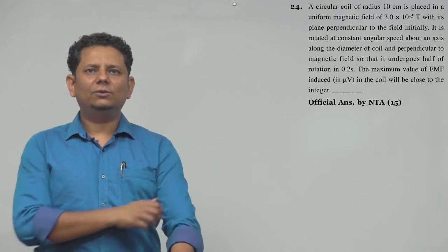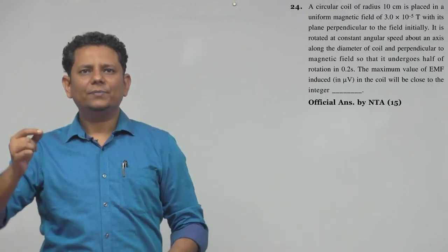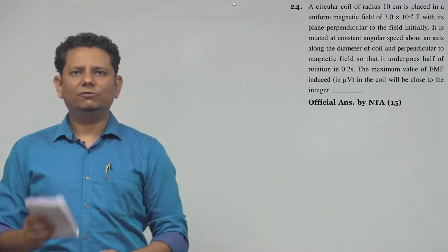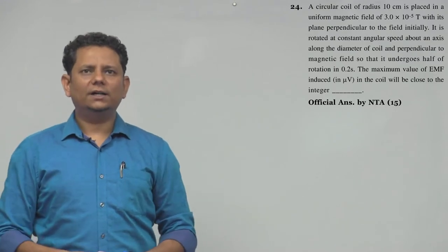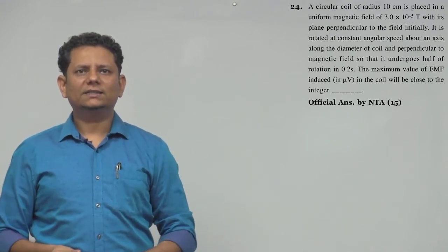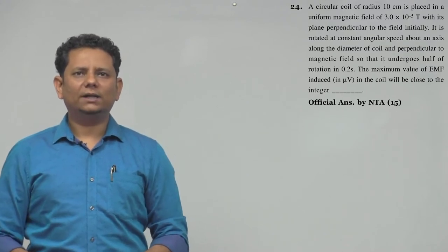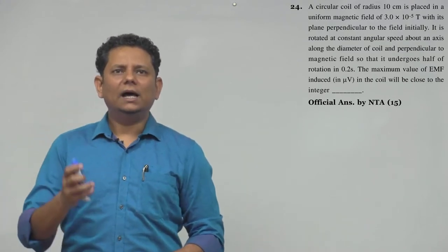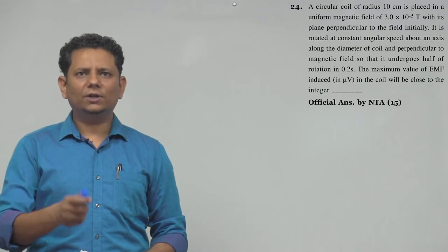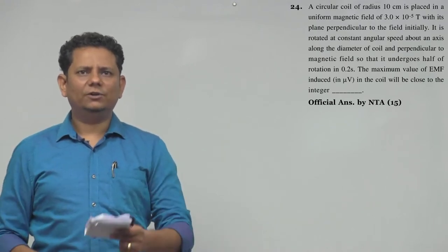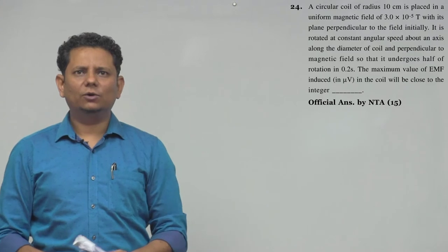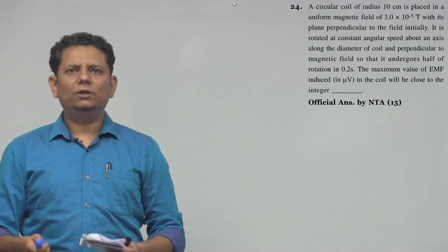Our next question says: A circular coil of radius 10 centimeters placed in a uniform magnetic field of 3 into 10 to the power minus 5 Tesla with its plane perpendicular to the field initially. It is rotated at constant angular speed about an axis along the diameter of the coil perpendicular to the magnetic field so that it undergoes half of rotation in 0.2 seconds. The maximum value of EMF in degrees in microvolt in the coil will be close to the integer.